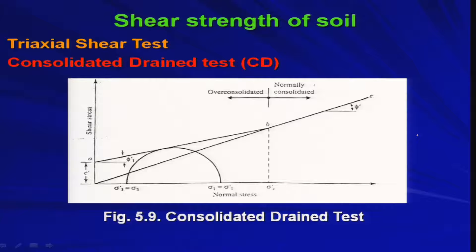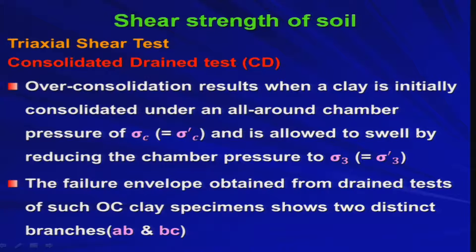This is a typical failure envelope obtained from the Consolidated Drained test. You will get two different regions: one talking about the over-consolidated region and another about the normally consolidated region. Over-consolidation results when a clay is initially consolidated under an all-round chamber pressure sigma_c (which equals sigma_c' in CD test since total and effective stress are equal because drainage is allowed and there is no excess pore water pressure).